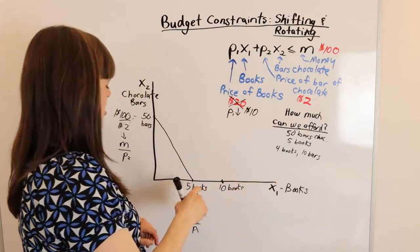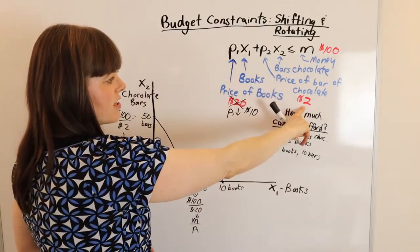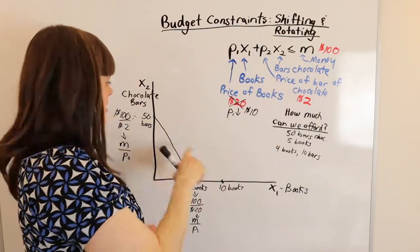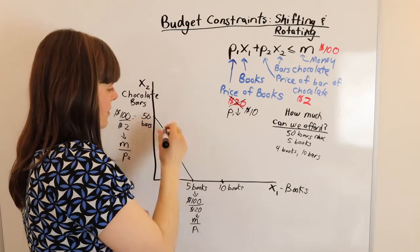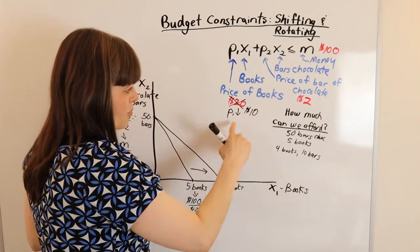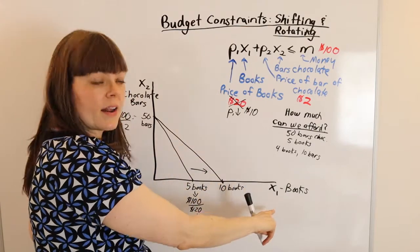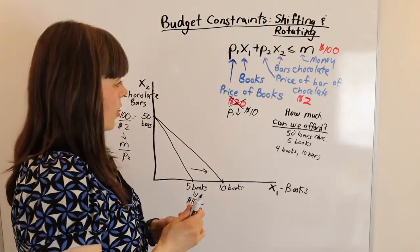So we know that's a point on the new budget constraint. But the price of chocolate bars has not changed. It's still at $2. So we can still only afford 50. So our intercept here has not changed. Our intercept here has. So that tells us that a decrease in the price of good one is going to rotate the budget constraint out as shown.